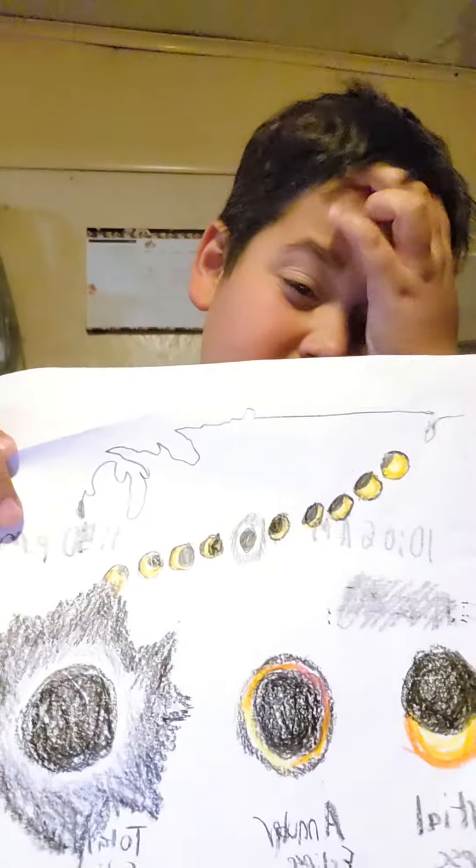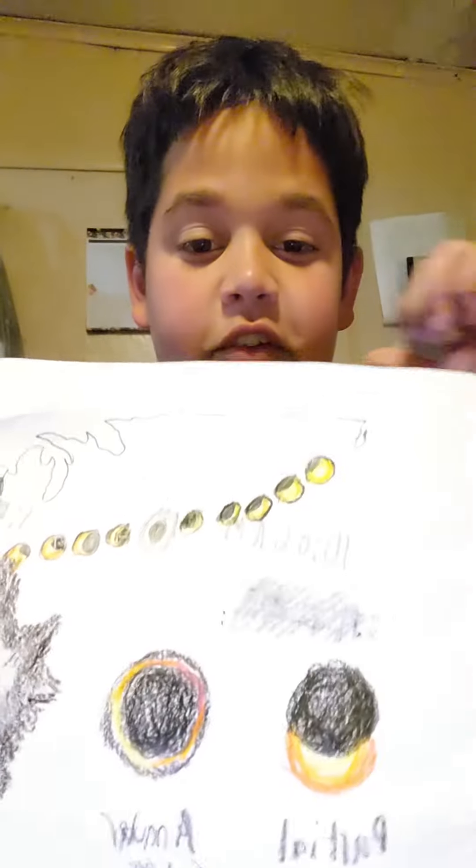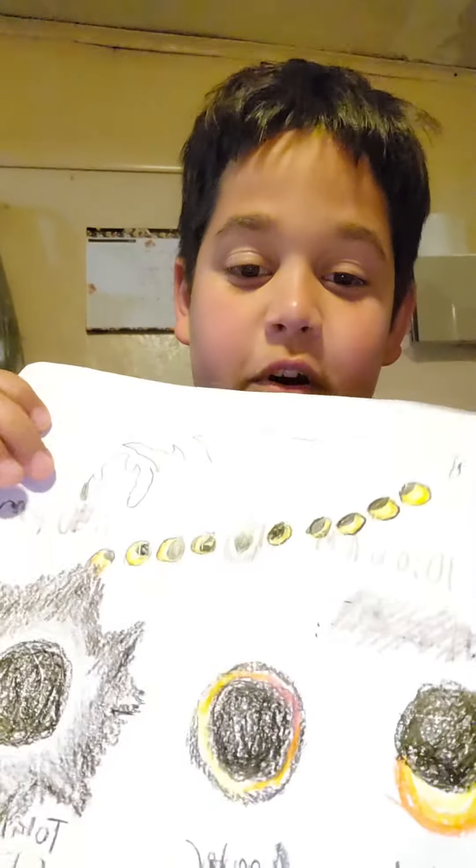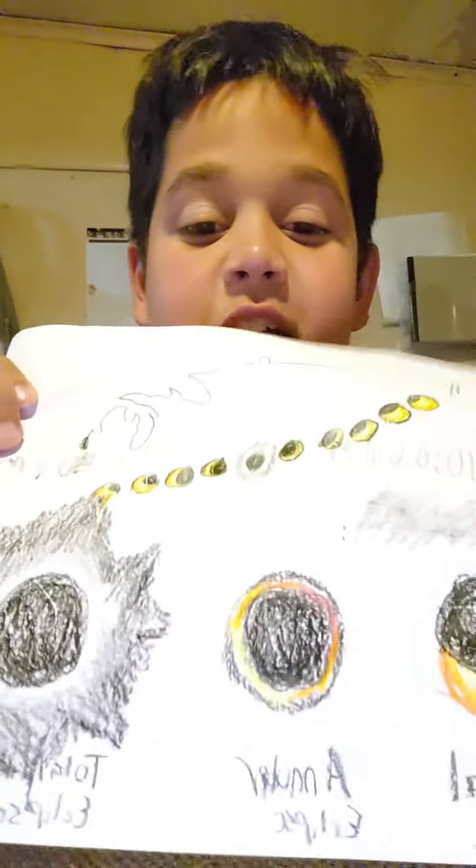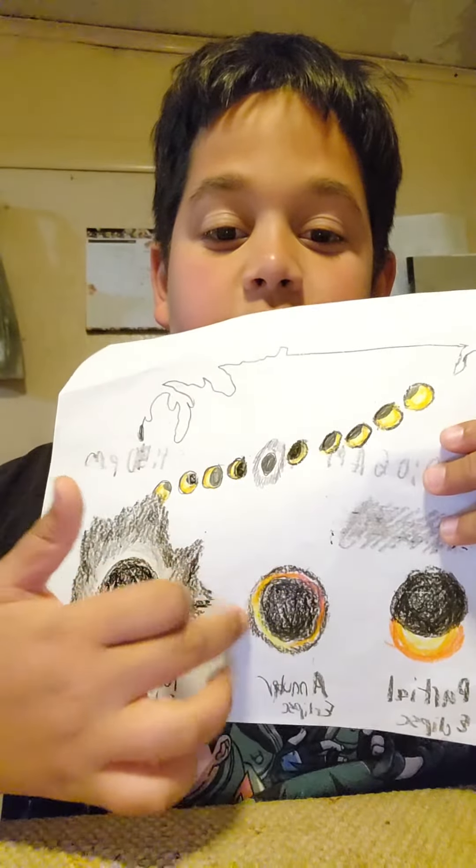These are the three different types of eclipses. First, there's a partial eclipse when the moon covers only part of the sun. The annular eclipse is when the moon is in front of the sun, but it's not complete yet.